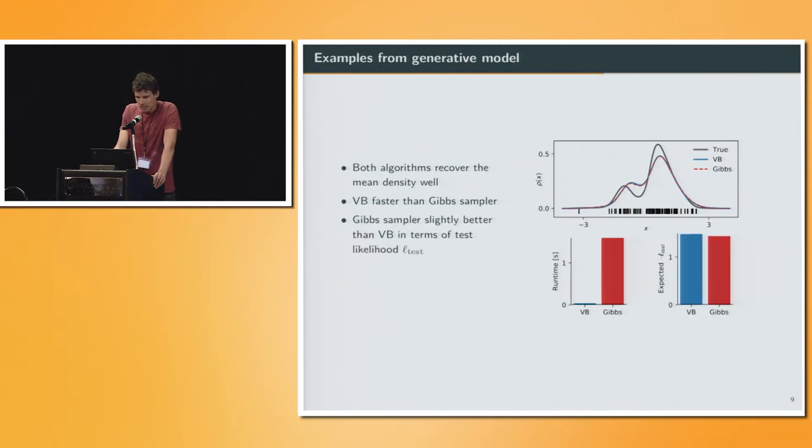Also as expected, the Gibbs sampler is slightly better than the variational Bayes in terms of test likelihood, because it is recovering in the limit of infinite samples the posterior exactly. Here I plot the negative test likelihood where lower is better, and we see that the Gibbs sampler is slightly performing better. The runtime of these both algorithms, especially of the Gibbs sampler, increases with the dimensionality of the problem and the number of data points.